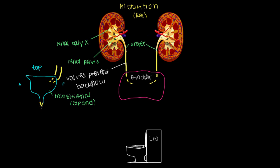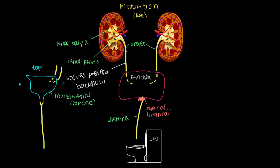From the bladder, urine leads into the urethra — the final part of the urinary tract. We don't just have urine leak from the bladder straight into the urethra; there's some control at the neck of the bladder. We have what's called the internal urethral sphincter — internal because it's deep inside us, and urethral because it surrounds the urethra. It's a circle of muscle not under our control that keeps urine within the bladder and doesn't let it leak out unless the bladder is really full.